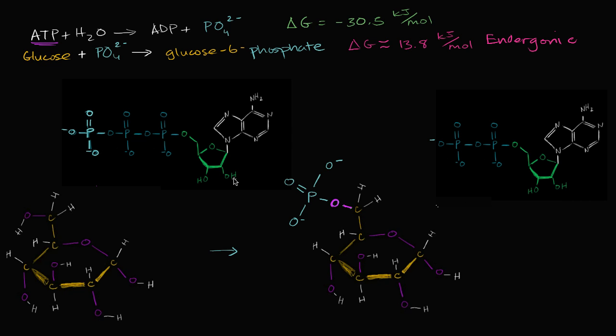And so you can imagine what we're going to need to make it happen. We're going to have to use the energy currency of the cell, our good friend ATP. And the way that we're going to make this reaction happen is we're going to couple what's essentially a hydrolysis of ATP into ADP and a phosphate group, which is very energetically favorable. It is exergonic.